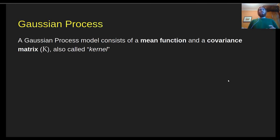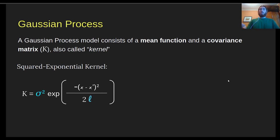The Gaussian process model consists of a mean function and a covariance matrix, also called kernel. The mean function can be anything - it can be constant, it can be a straight line, whatever you want. And the covariance matrix, the kernel can have different forms. This is just one example, the squared exponential kernel, which looks like this. And it has two main parameters: the variance and the length scale.